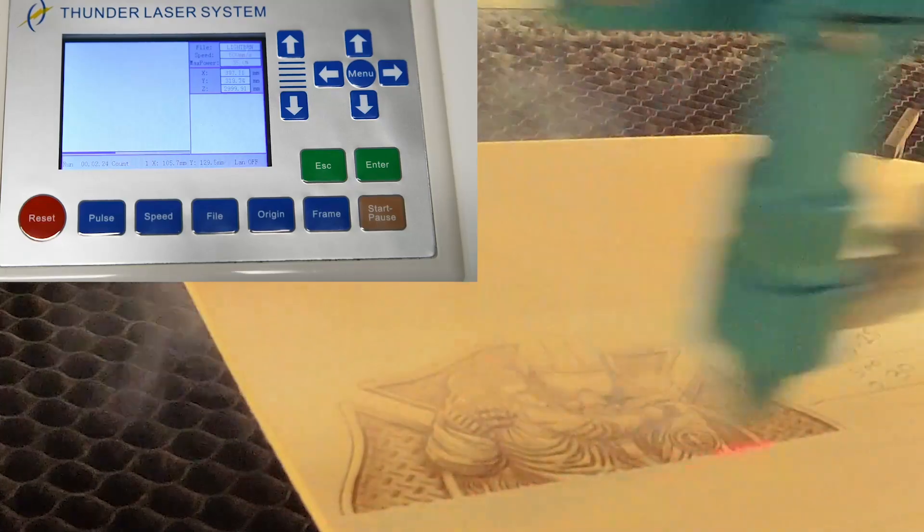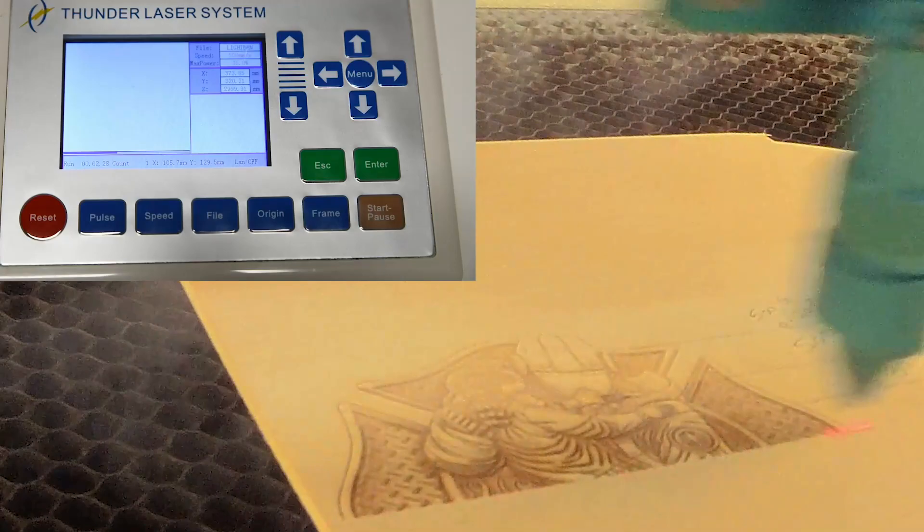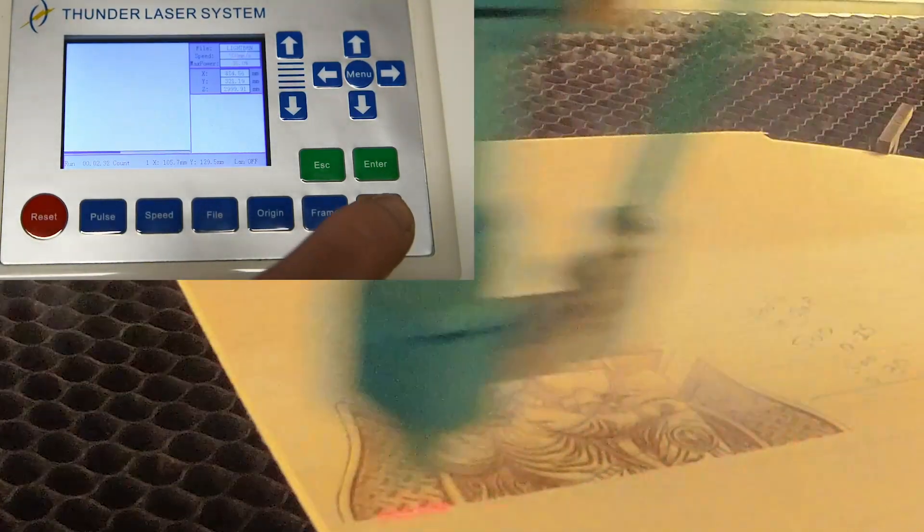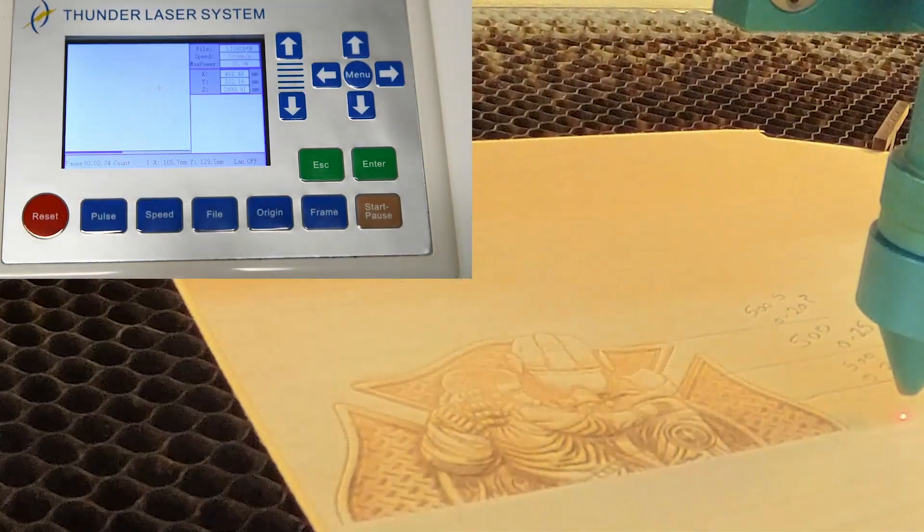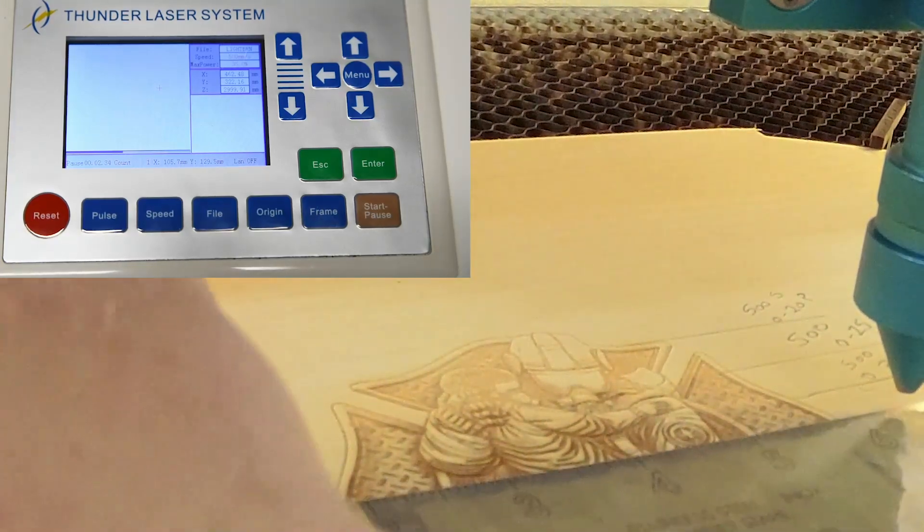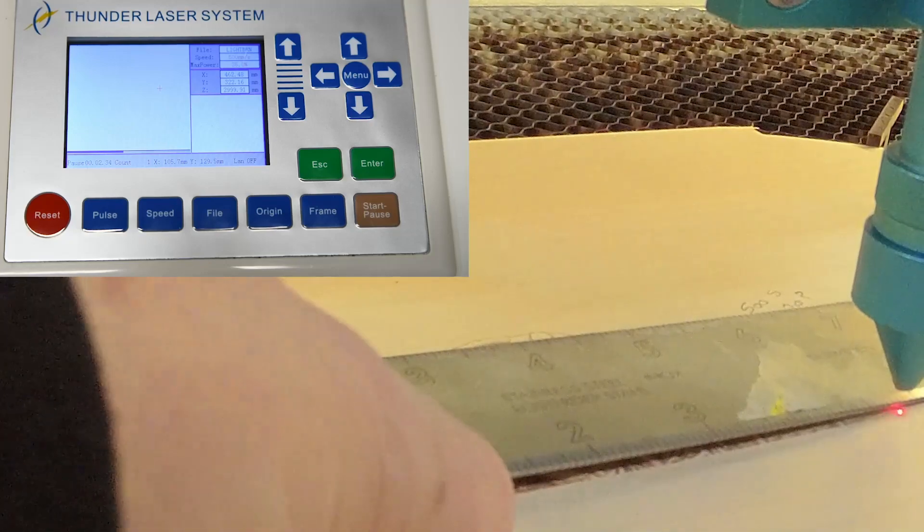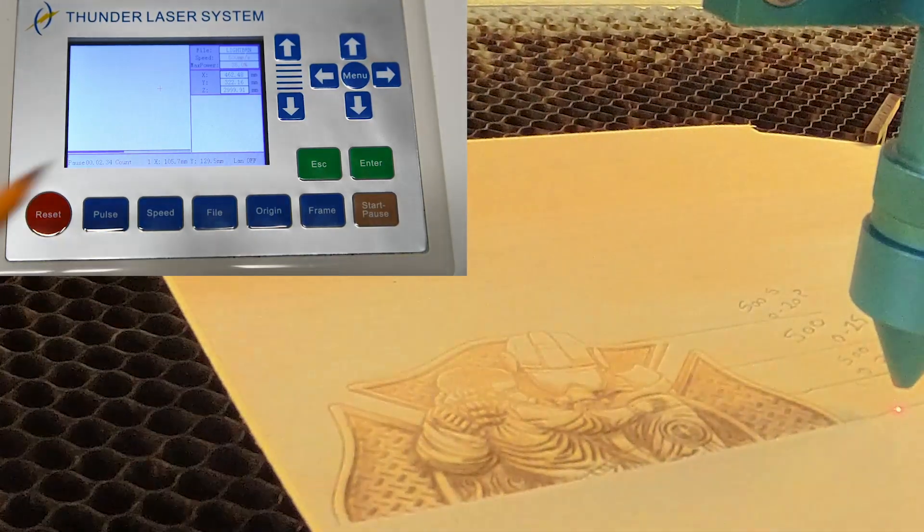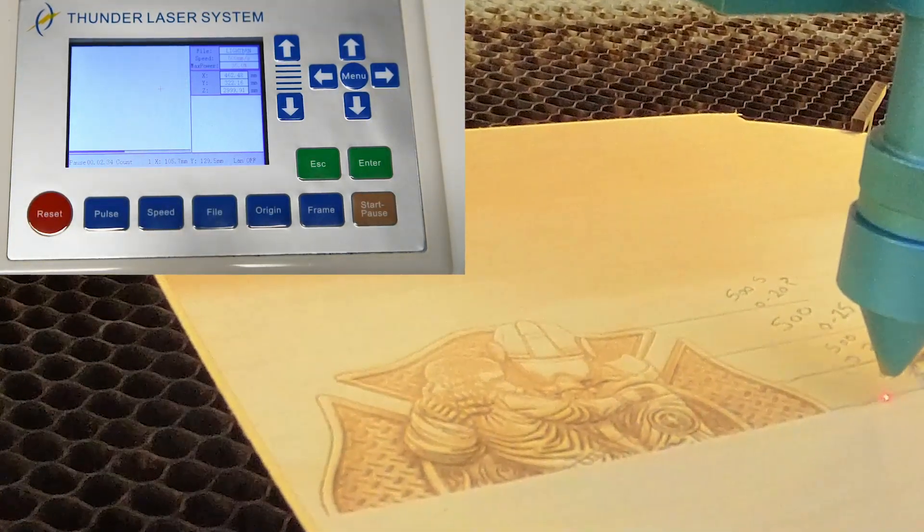You can see now, now the design started to come out a lot better as well. And I believe this is 500 at 35 power, 500 speed 35 power. But like I say, that's why you want to write it down on there as well, because it's hard to remember a lot of these numbers when you're doing a lot at once. Yeah, just double check as well on your controller.